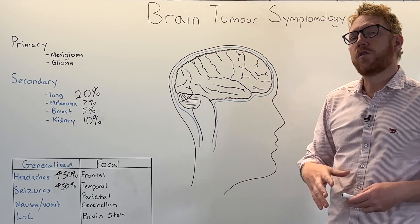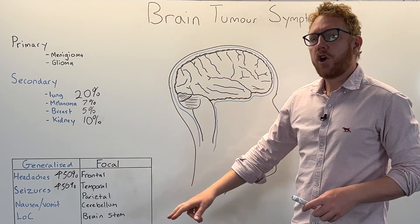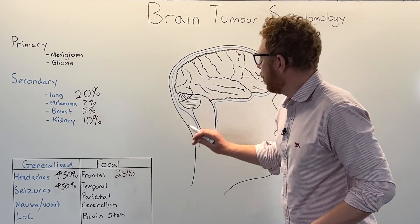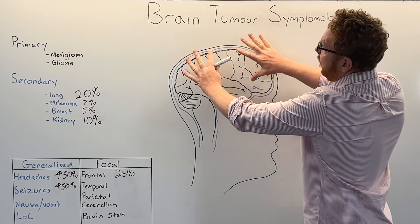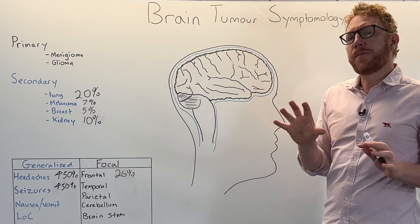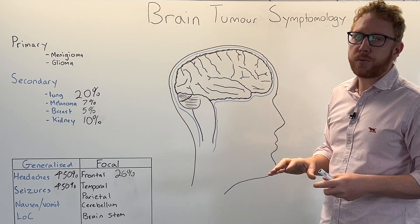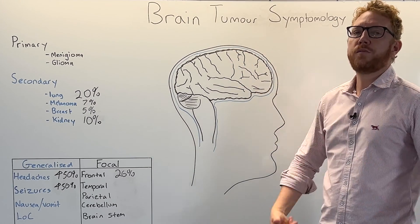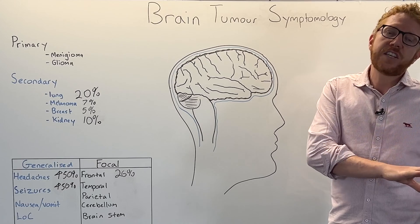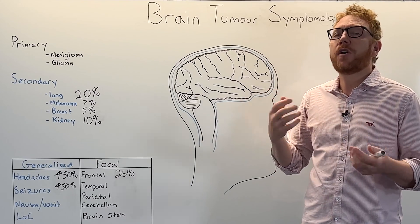Moving to focal or localised effects, the frontal lobe is the most commonly impacted brain region, with about 26% of all brain tumours affecting it. Two-fifths of the brain is the frontal lobe - a very large region with diverse functions. One key function is the production of movement through the primary motor centre. A tumour pressing on or invading this area can cause reduced movement, which is weakness, or increased movement such as focal seizures - for example, a tonic-clonic type seizure.